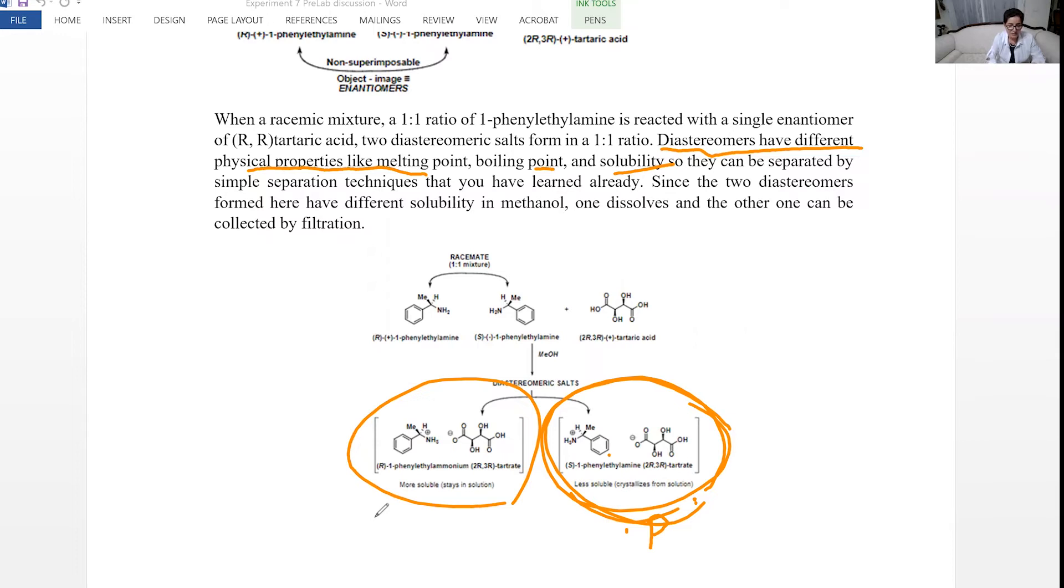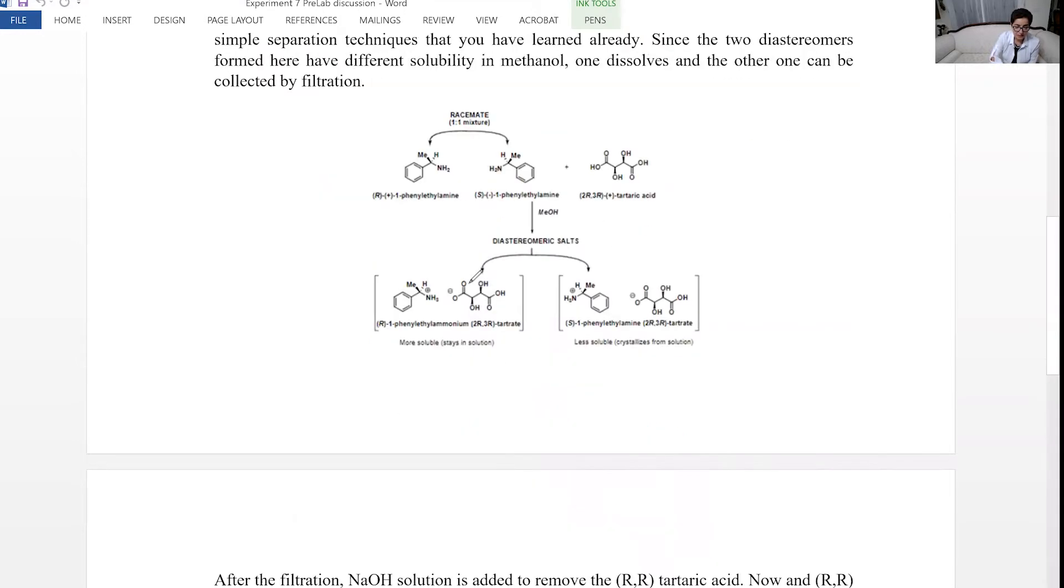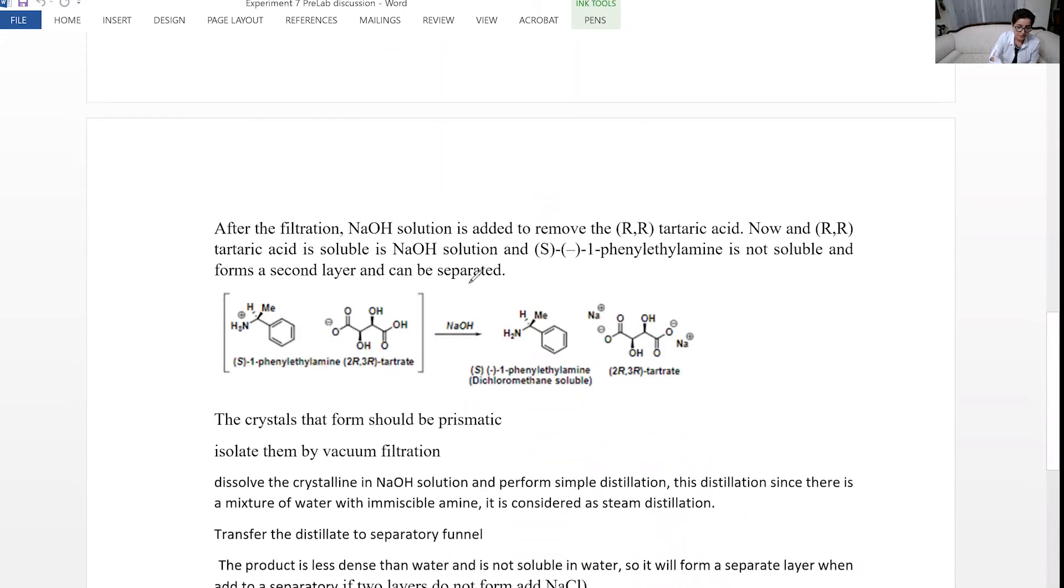Bottom line, you have changed a pair of enantiomers to a pair of diastereomers. These are enantiomers, these are diastereomers. Diastereomers have different boiling point or solubility, and it allows us to separate. And separation is going to be easier when you have diastereomers.